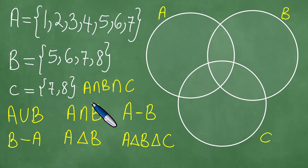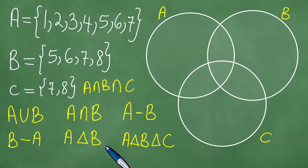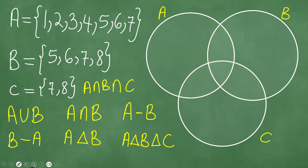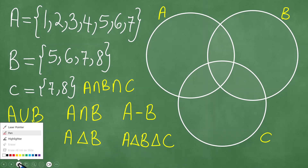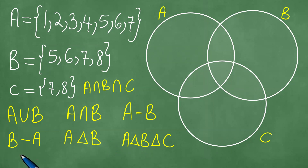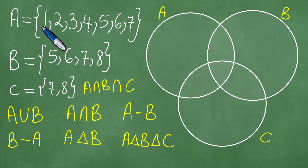We want to find: A intersection B intersection C, A union B, A intersection B, A minus B, B minus A, the symmetric difference of A and B, and the symmetric difference of A, B, and C. Set A consists of the elements 1, 2, 3 up to 7.